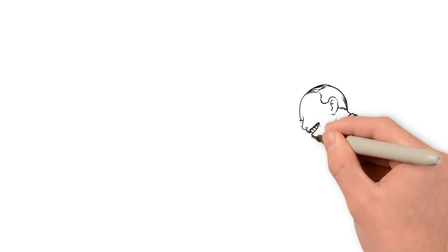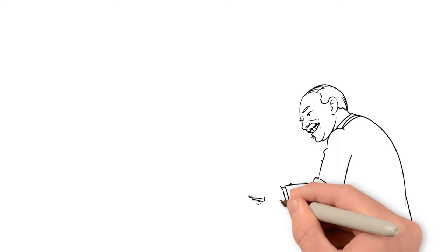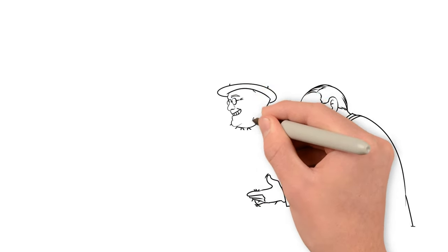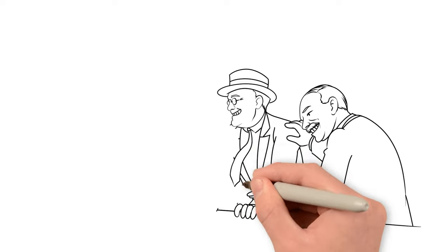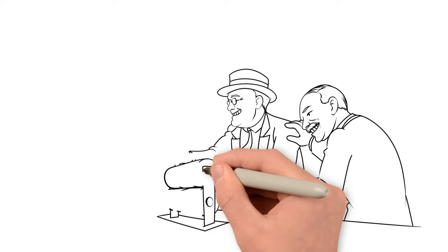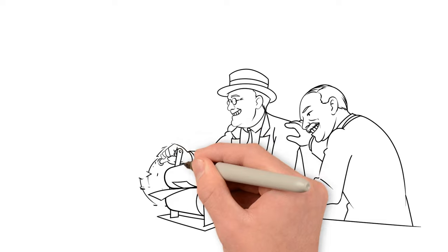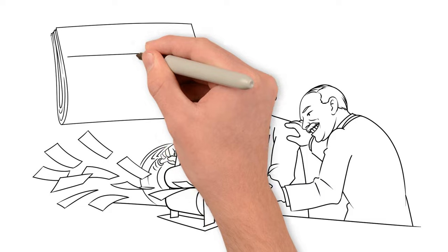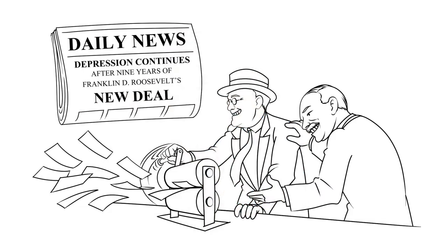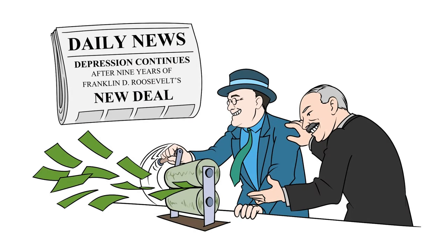FDR's wartime policies mirrored his earlier New Deal, based on the ideas of economist John Maynard Keynes. During recessions, Keynes believed governments should stimulate demand by printing money to spend on public works. FDR applied this formula to his New Deal programs, but after nine years, the economy remained in shambles.